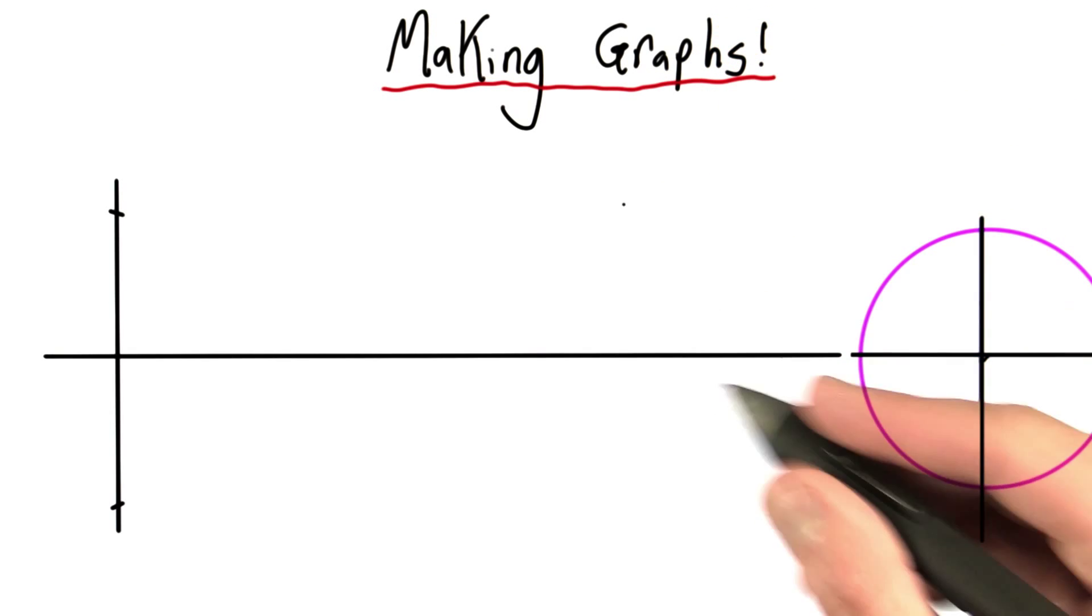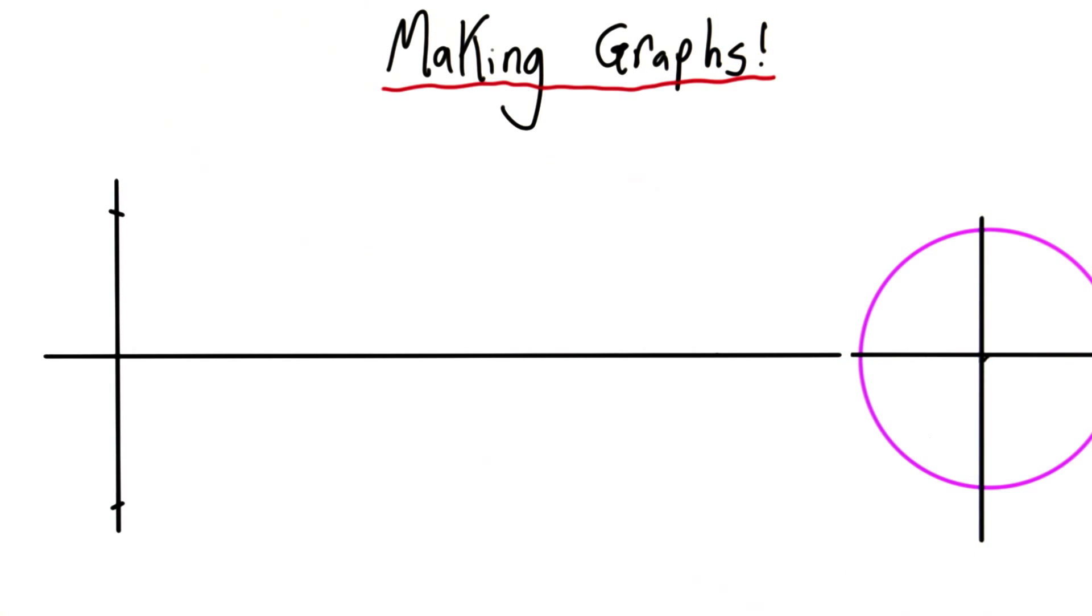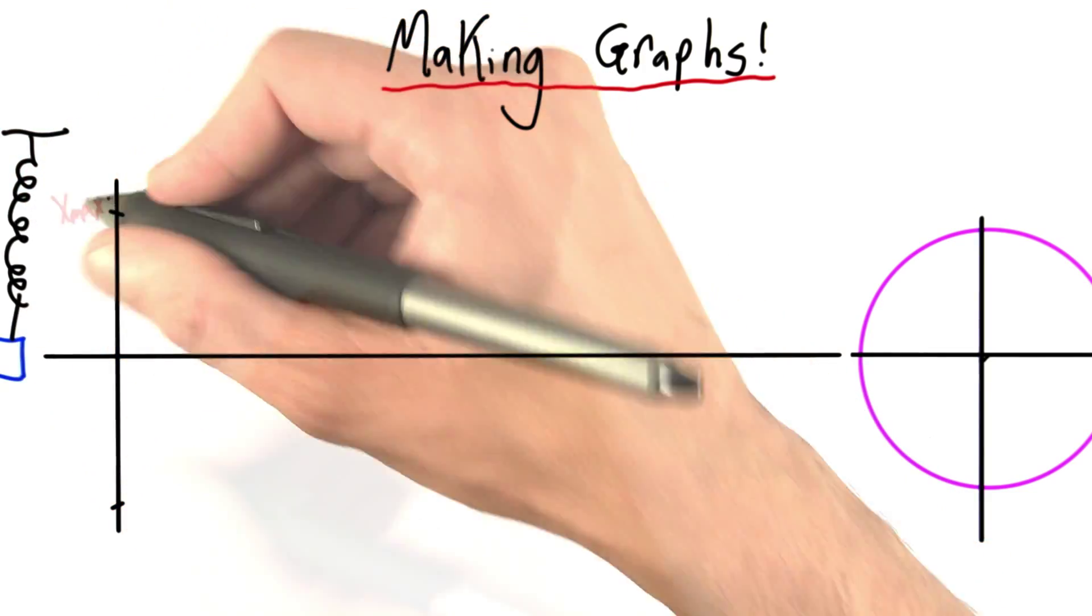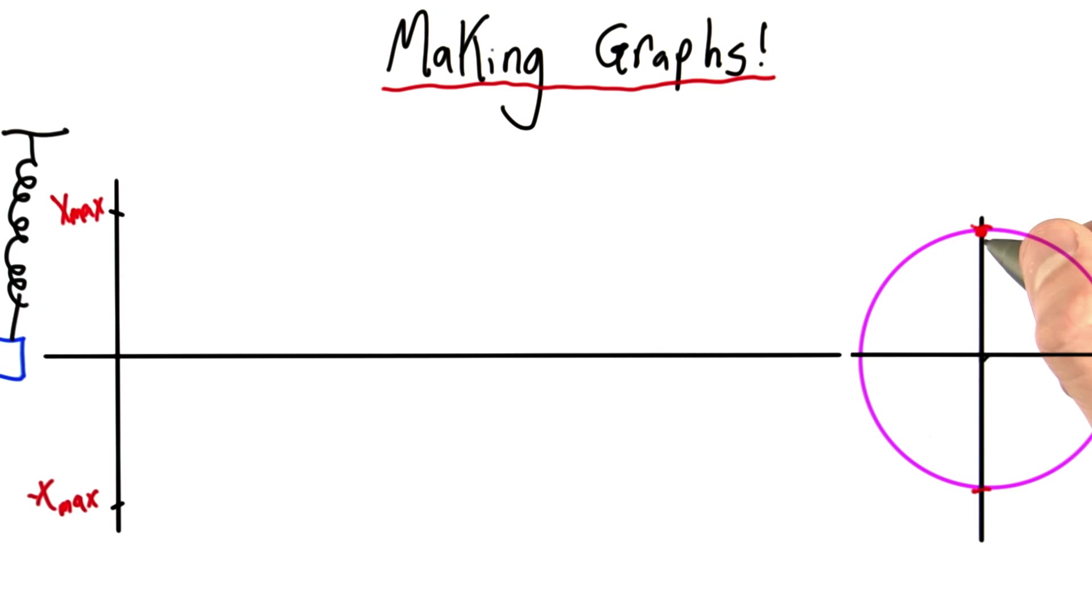So we've already talked about one way to visualize a mass bobbing on a spring. Let me draw that picture over here. We're thinking about this mass going from x max to minus x max. We've talked about this interpretation over here, but this was a graph of position versus velocity.